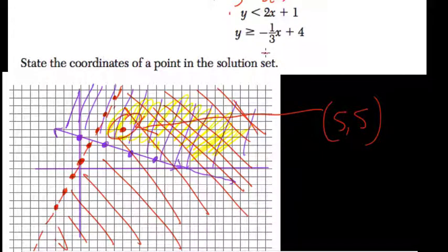Negative 1/3 times 5 is negative 5/3 plus 4, so that's 12/3. Altogether, that would be 7/3. Is that greater than or equal to 5? Right? The y value of this point. Yes, 7/3 is about 2 and a third. It's 2 and a third, excuse me, which is less than or equal to 5. So it does check out both. So this point, you can plug it into both equations.